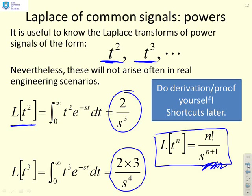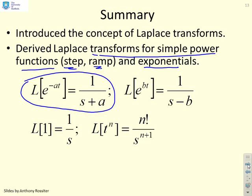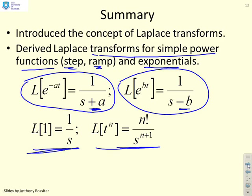So a summary. We've introduced the concept of Laplace transforms, and we've said just use the definition, keep it simple. And we've derived Laplace transforms for some simple power functions, the step, the ramp, and also for exponentials. So the sorts of things you've got, Laplace of an e to the minus a t gives you a 1 over s plus a. Laplace of an e to the b t gives you a 1 over s minus b. So you'll see convergent exponentials, you get an s plus a. Divergent exponentials, you get an s minus b. Laplace of a step is 1, and Laplace of a t to the n, n factorial, over s to the n plus 1. And we've also demonstrated that superposition applies, that is the Laplace of a sum is the sum of the Laplace.